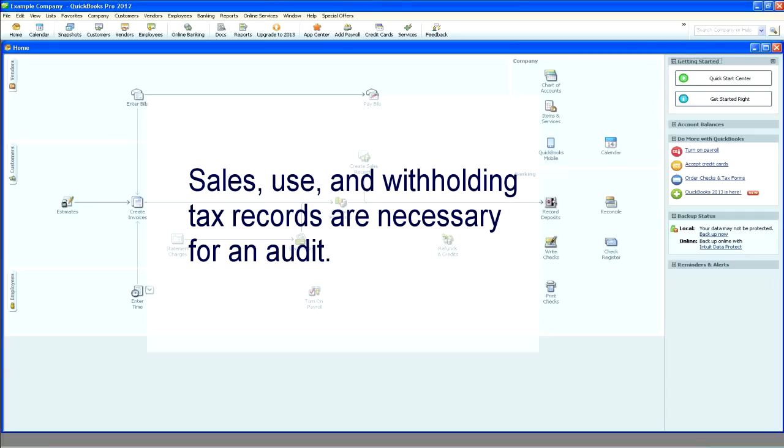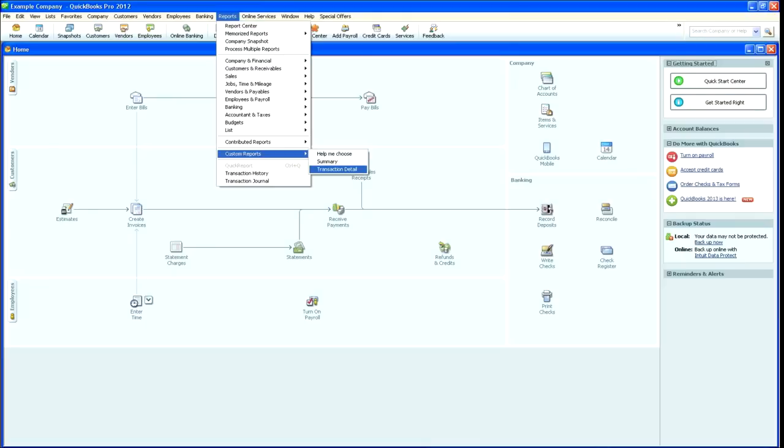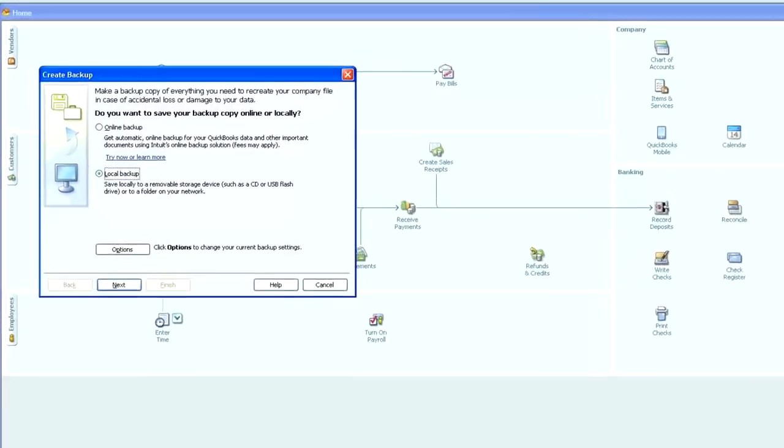In general, transaction detail associated with sales, use, and withholding taxes should be provided for an audit. This can be achieved in several ways. Providing a QuickBooks backup file is the easiest way to ensure you have provided all of the electronic information necessary for your audit examination.